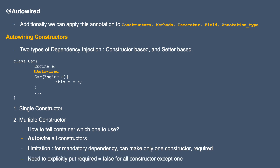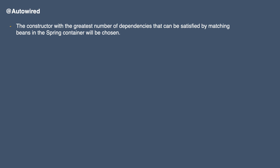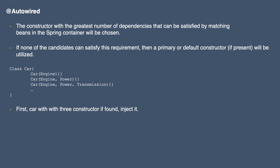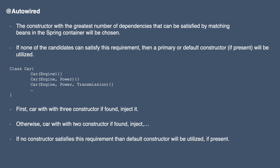We need to explicitly set required=false for all constructors except one. In that case, the constructor with the greatest number of dependencies that can be satisfied by matching beans in the Spring container will be chosen. If none of the candidates can satisfy the requirement, the primary or default constructor will be used if present, otherwise an error is thrown. For example, if our Car class has three constructors — one, two, and three arguments — Spring will try the three-argument constructor first, then two, and so on. If none satisfy the requirement and there's no default constructor, it will throw an error. Also, we don't need to make the constructor public — it will work regardless.